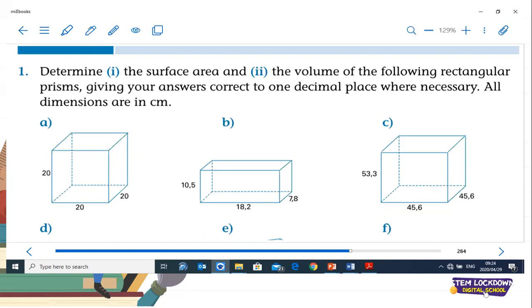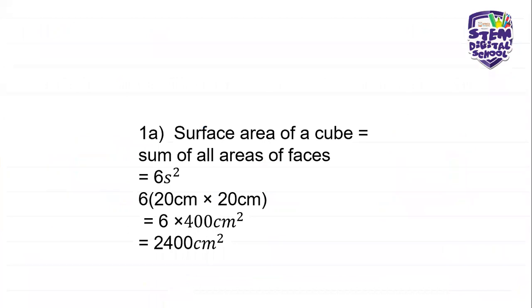Substituting: surface area equals 6 times 20 squared. 20 squared is 20 times 20, which is 400. Multiplying 400 by 6 gives 2,400 square centimeters. The formula is 6S squared — S is 20 centimeters, so S squared is 400 square centimeters, and multiplying by 6 gives 2,400 square centimeters. That is the surface area of any cube where the length is 20 centimeters.